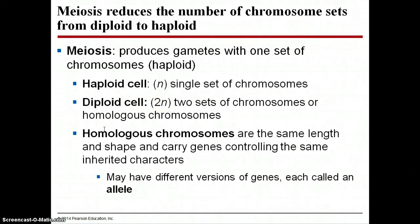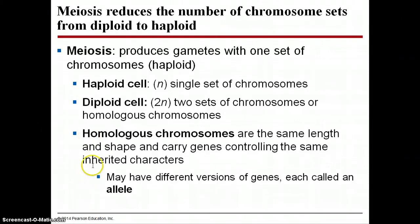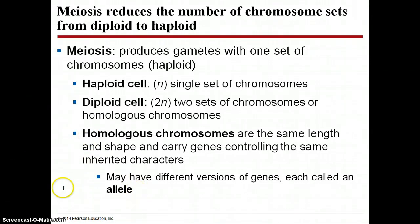A good way to think about whether you have a diploid cell is to think about whether you have homologous chromosomes present. Homologous chromosomes have the same length, the same shape, and the same genes. They may just have different versions, or different alleles, of those genes.